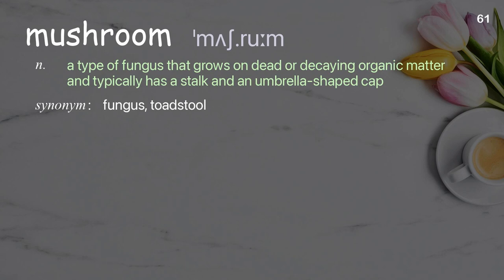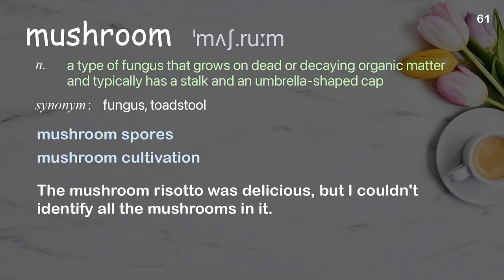Mushroom: A type of fungus that grows on dead or decaying organic matter and typically has a stalk and an umbrella-shaped cap. Examples: Mushroom spores. Mushroom cultivation. The mushroom risotto was delicious, but I couldn't identify all the mushrooms in it.